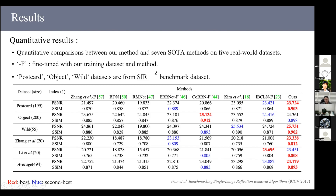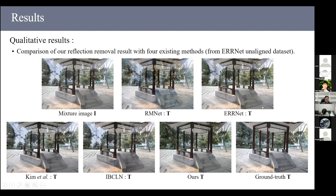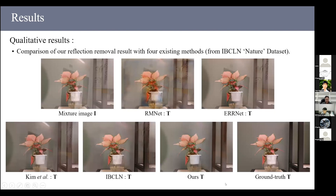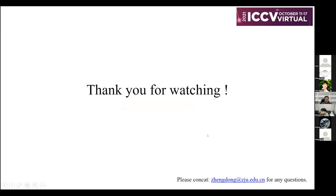Since we don't have ground truth reflection maps, we use an unsupervised approach: the network is trained using MSE loss between the predicted image and ground truth transmission image, using the linear blending formula I = W * T + R, where W is the mask, T is the transmission, and R is the reflection. This allows us to train the network to predict the reflection confidence map in an unsupervised way. Our method ranks number one or two on all tested datasets in PSNR and SSIM metrics, and qualitative comparisons show our method removes more reflections than existing methods.